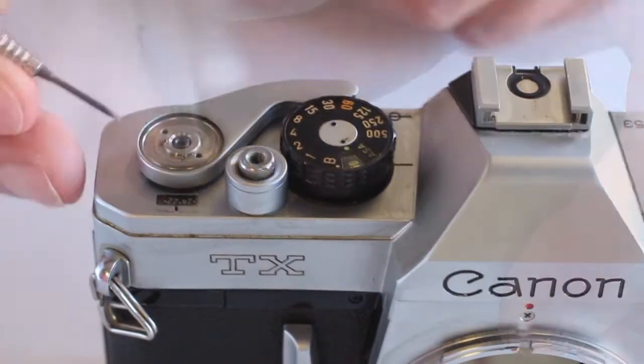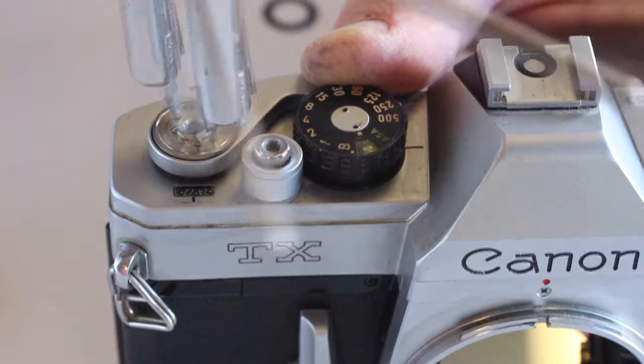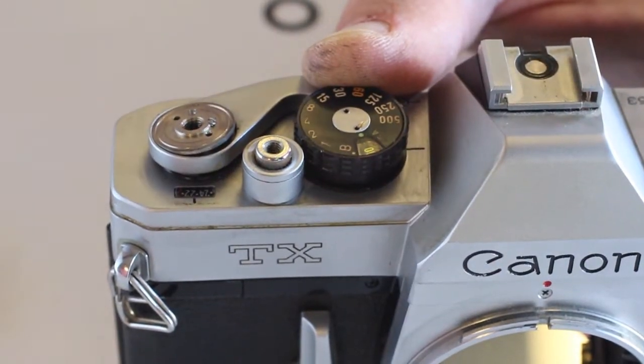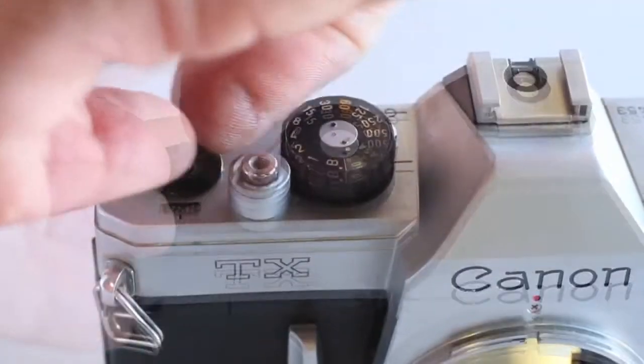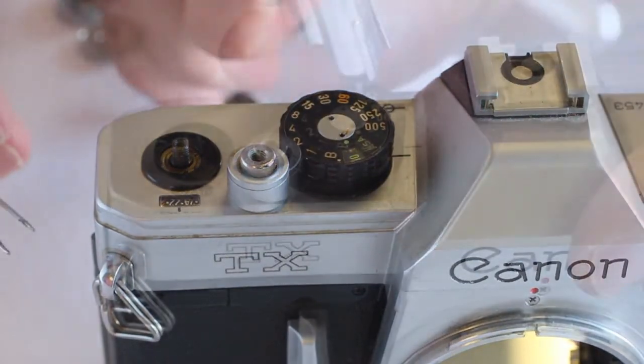Remove the top cover by following the detailed description and procedure outlined in the Fix Old Camera video on the replacement of meter diodes in the Canon FTB, TX, FT, and TLB.